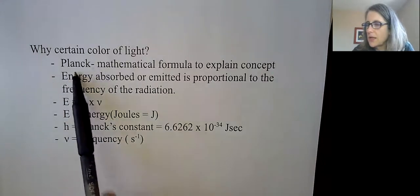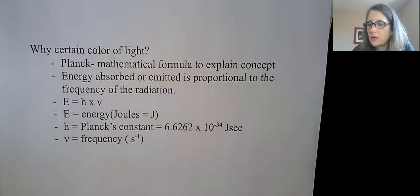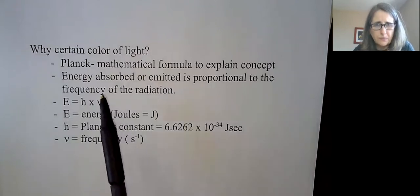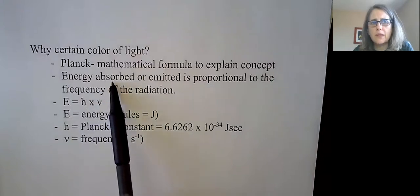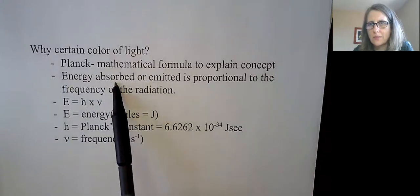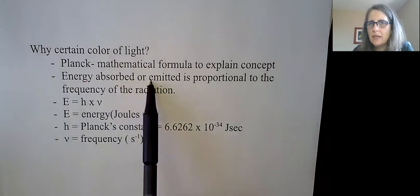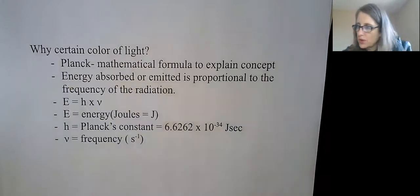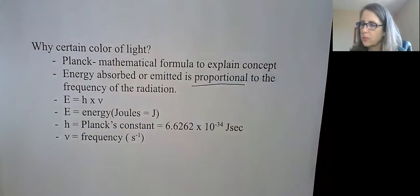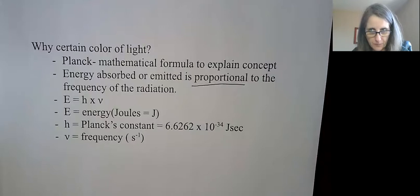We have a scientist called Planck who came up with a mathematical formula to explain why we see the colors that we do or why we see the light that we do. He was able to figure out that energy is absorbed or emitted - absorbed means going in, emitted means coming out - is proportional, key word there, proportional to the frequency of the radiation. We've been doing lots of proportions. This is a pretty straightforward calculation, but understand that energy is related to frequency.